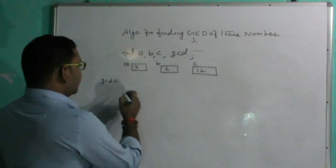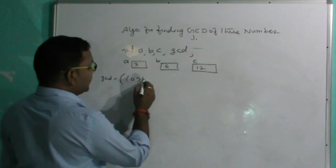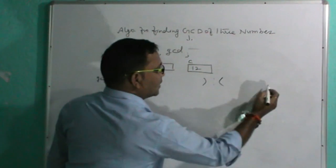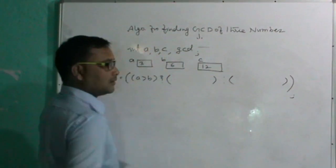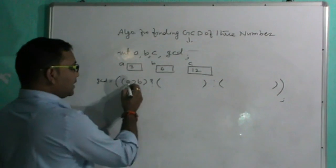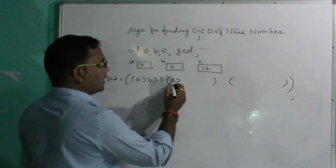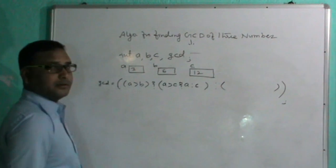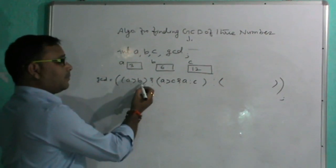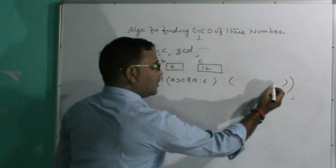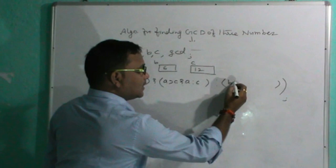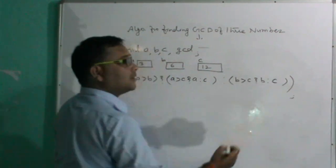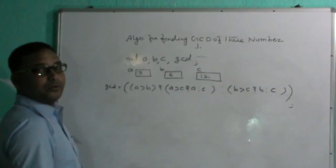Using the conditional operator: if a is greater than b, control goes after the question mark; otherwise it goes after the colon. If true, we check whether a is greater than c. If false, b is greater, and we check whether b is greater than c. If b is greater than c, we write b; otherwise we write c. This gives us the largest value among the three stored in GCD.